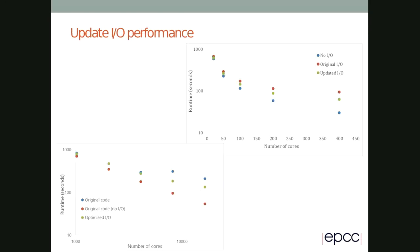Doing that let us strip out some of the cost. We improved performance from the original code to the optimized IO version — the green dots versus the blue dots on the bottom left graph. We can see we're still nowhere near the performance without IO, but we have cut back the cost of writing the data. Because we're only doing small simulations with small numbers of iterations, this is a large amount of IO cost compared to actual computational cost, which is not what you would see in real practice.